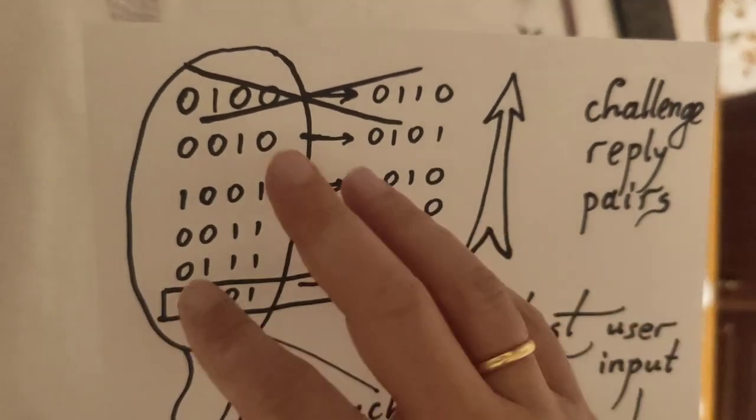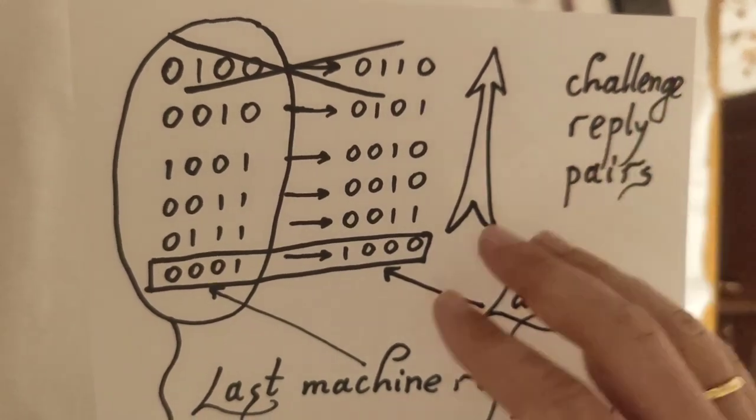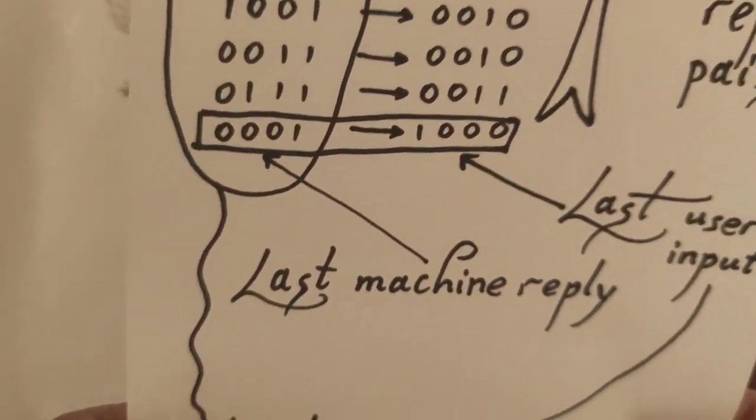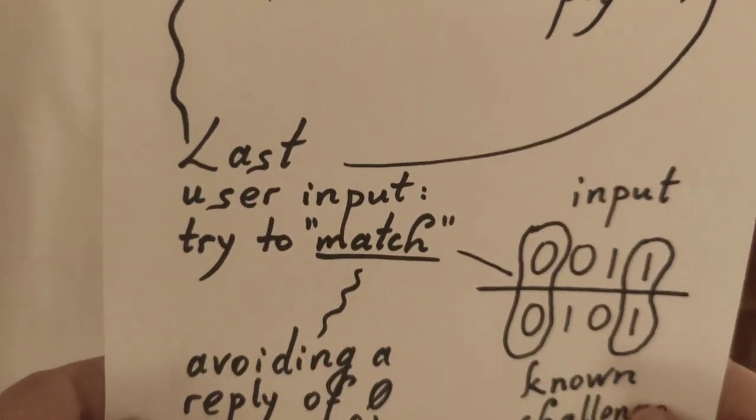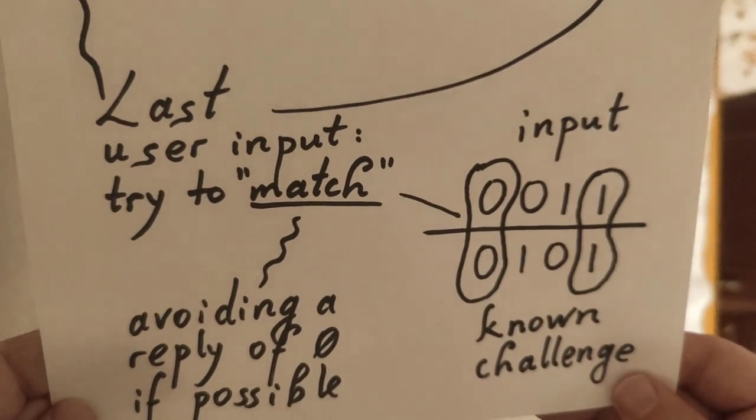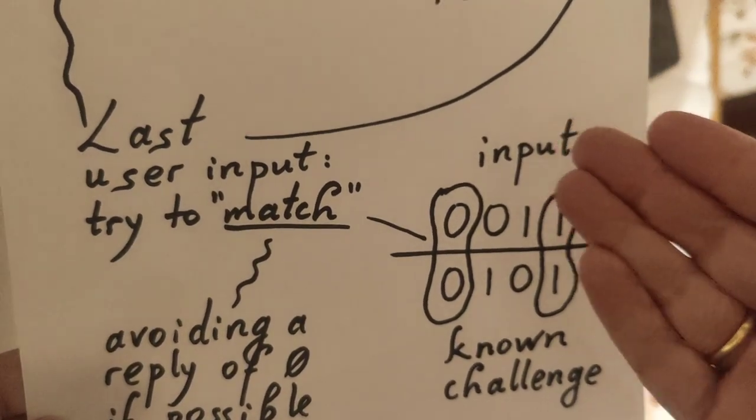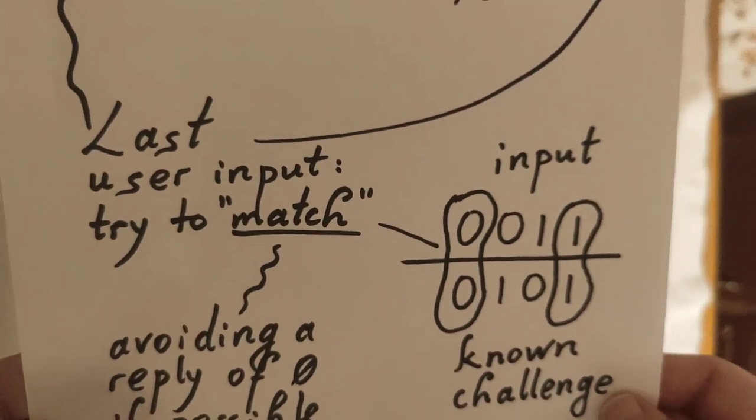So, that's the knowledge base consisting out of challenge reply pairs. It is being evolved as the user supplies input. And perhaps, last, we should talk about how user input is actually matched against known challenges.